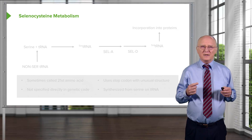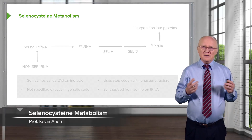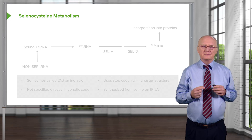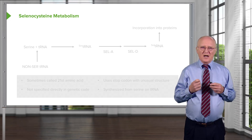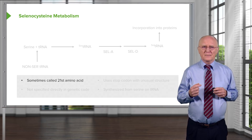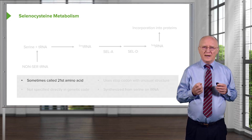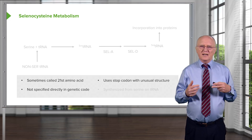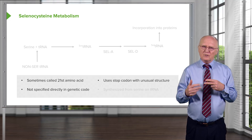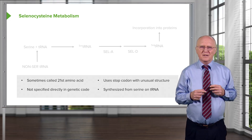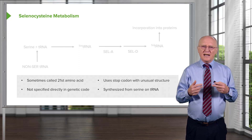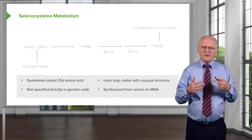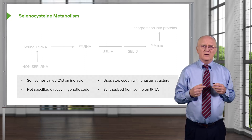Another member of the cysteine family is one of the rare amino acids: selenocysteine. It does not normally occur in proteins and is very rarely found. Its way of appearing in proteins is unusual, and its synthesis is also a little unusual. Selenocysteine is sometimes called the 21st amino acid because it's not coded for in the genetic code — it uses a stop codon in the translational process to get into a protein. The other amino acid that has a modification occurring on a transfer RNA is methionine, which I'll discuss later.